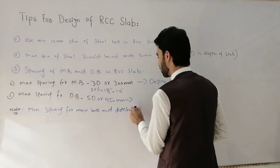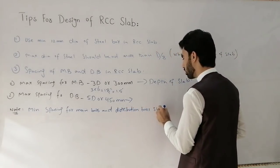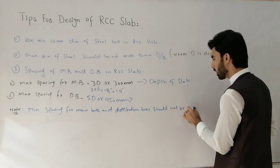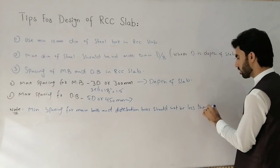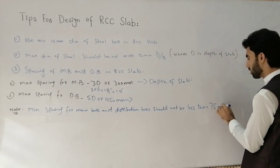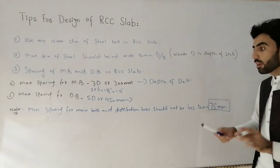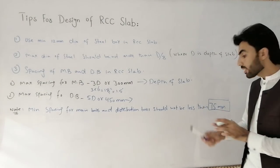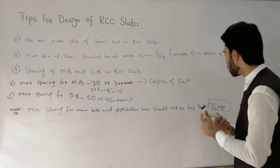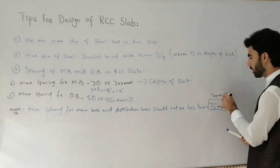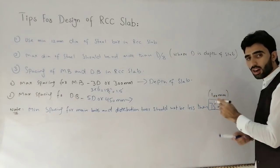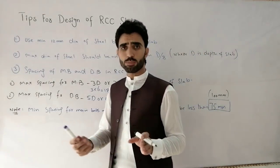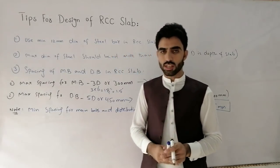The minimum spacing for main bars and distribution bars should not be less than 75 mm in RCC slab. You can take 100 mm or 75 mm, but not less than 75 mm — meaning minimum spacing should not be less than 3 inches in RCC slab.